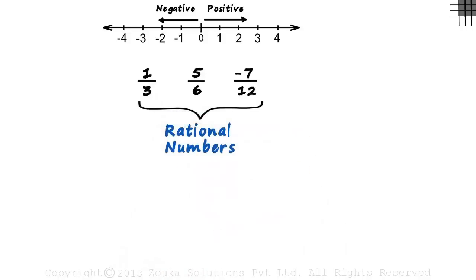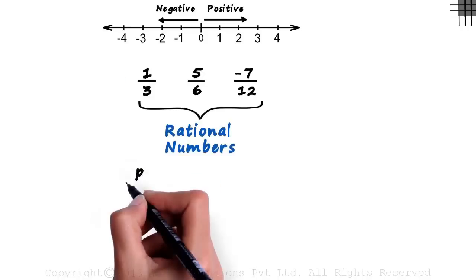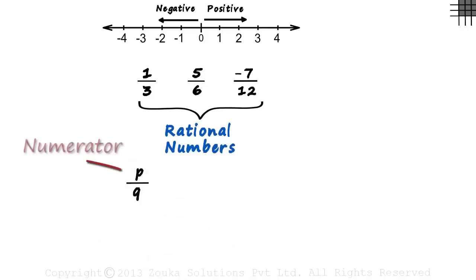But we need to define them well. We cannot say numbers like these are rational numbers. We say that they are of the form P by Q. One number in the numerator and one in the denominator.